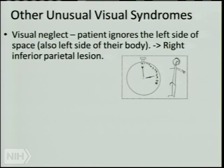Visual neglect is really fascinating — these people neglect almost always the left side of space and sometimes the whole left side of their body. If you ask them to draw a clock and fill in numbers, they put everything on the right side. Draw a person — the whole left side is missing. In line bisection tasks, they mark way over to the right, attending only to the right side of the page.